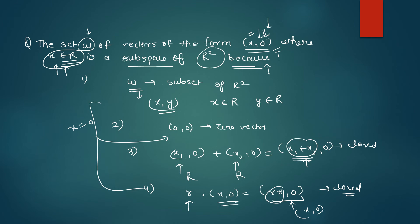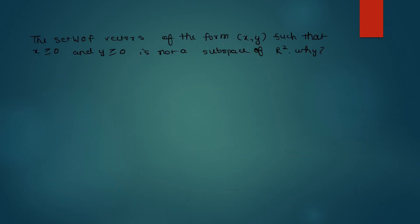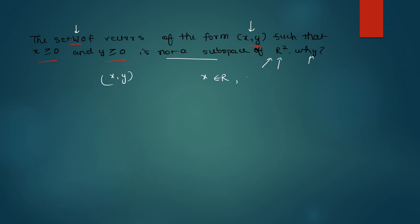Let's take another example. This question states that there is a set W of the form (x, y) where x ≥ 0 and y ≥ 0, and we are told it is not a subspace. That means it is not following all the properties we just discussed. We just need to prove that any one of the properties is false. So W consists of elements (x, y) where x and y belong to R, but with the condition that both x and y are greater than or equal to 0.